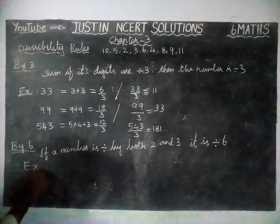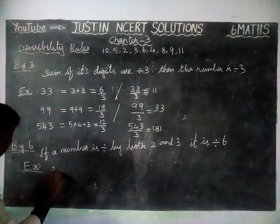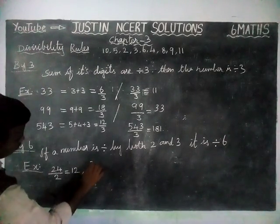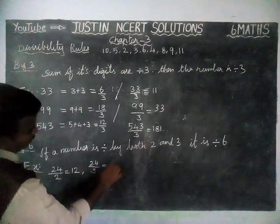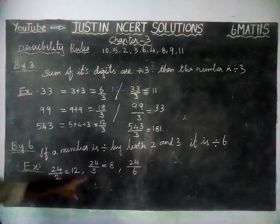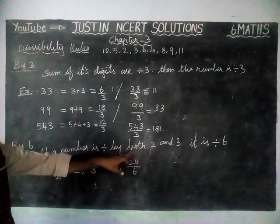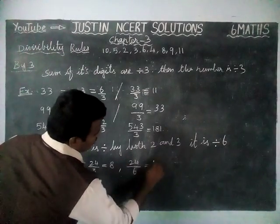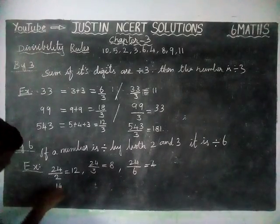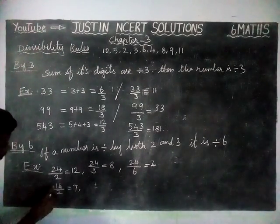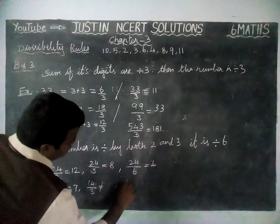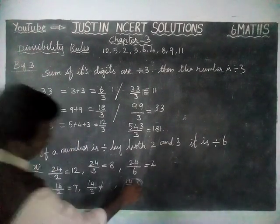We will check it by using examples. Take 24 ÷ 2 = 12, and 24 ÷ 3 = 8. Since 24 is divisible by both 2 and 3, according to the rule the number is divisible by 6 — 6×4 are 24. Now we check number 14: 14 is divisible by 2, giving 7. But 14 is not divisible by 3 — we cannot get a whole number. So 14 is not divisible by 6.